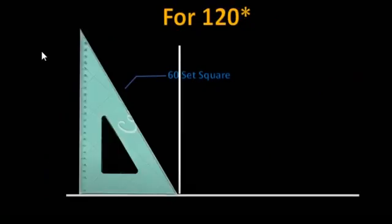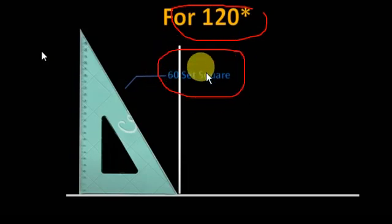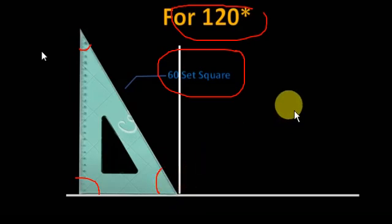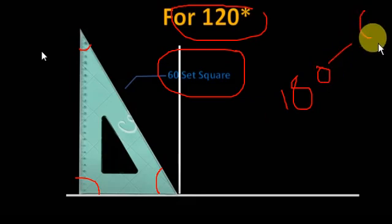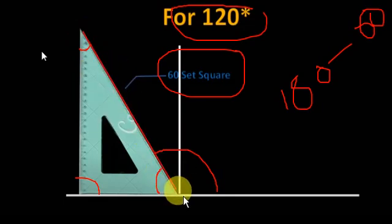Now let us see how to construct an angle of 120 degrees. To construct an angle of 120 degrees, you have to choose the 60-degree set square. Here it is 90 degrees, here 30 degrees, and here it is 60 degrees. Using the same procedure: 180 minus 60 equals 120. You draw a line here — this area is 120 degrees.